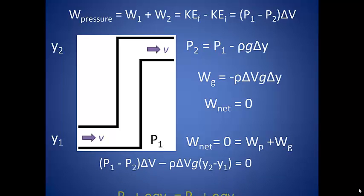Now again, delta v will cancel and we can move all the one values to the left and all the two values to the right. In this form, we can see how pressure changes when the height of the fluid changes. If we increase the height, then the pressure will go down. You're probably thinking that we already knew this, but this is simply the mathematical expression for that particular phenomenon.